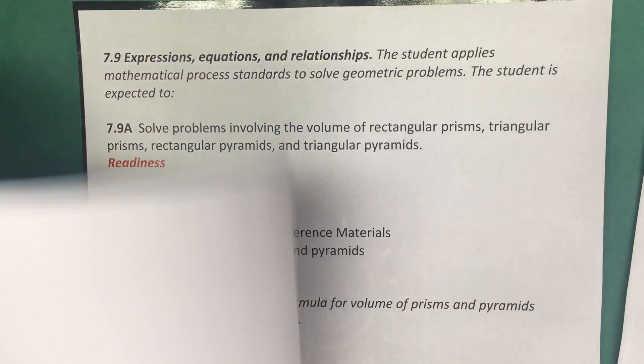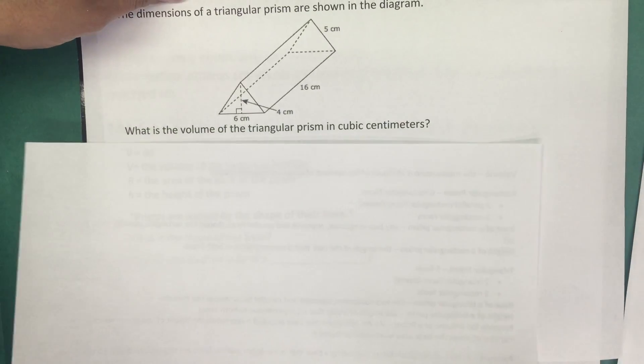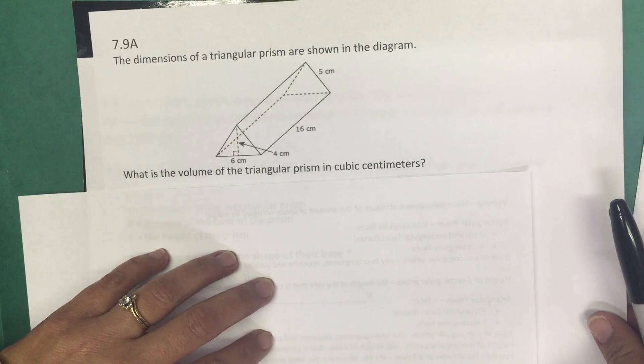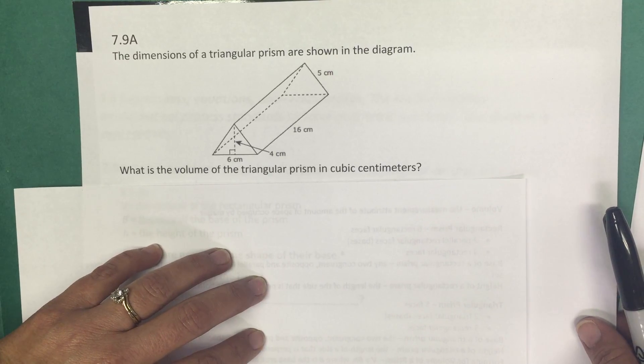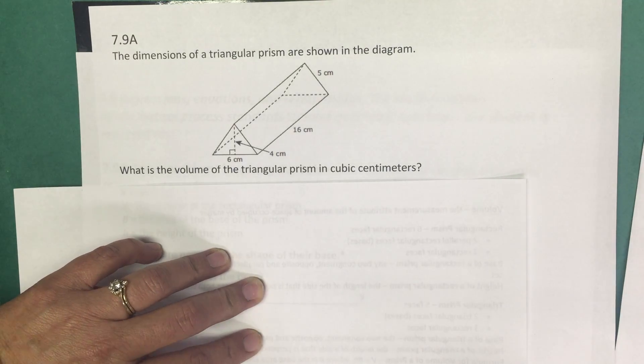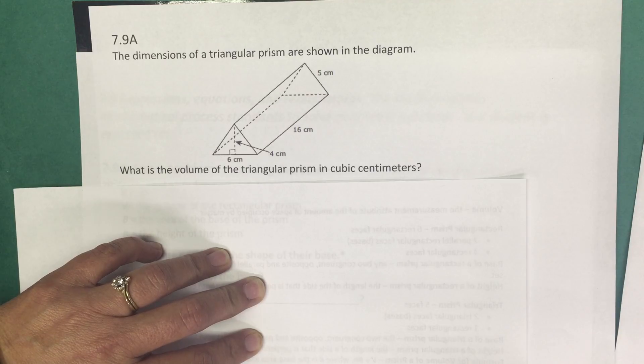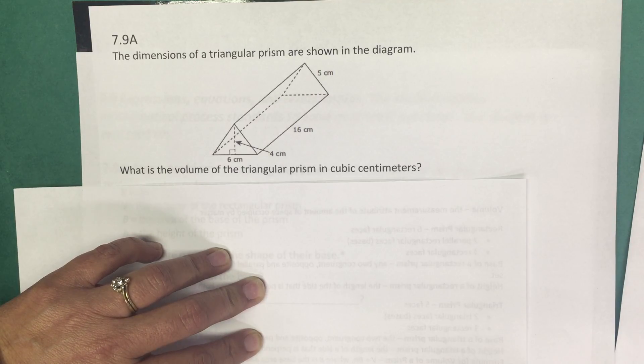Let's take a look at a released item. This item comes from the 2016 7th grade STAAR test and it says the dimensions of a triangular prism are shown in the diagram. What is the volume of the triangular prism in cubic centimeters?